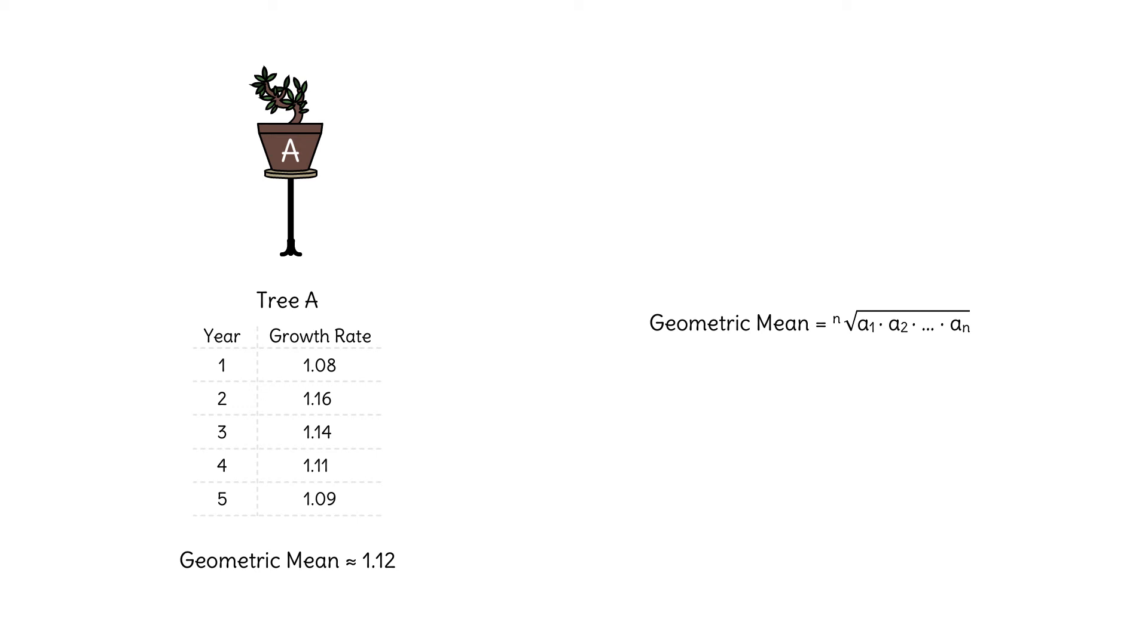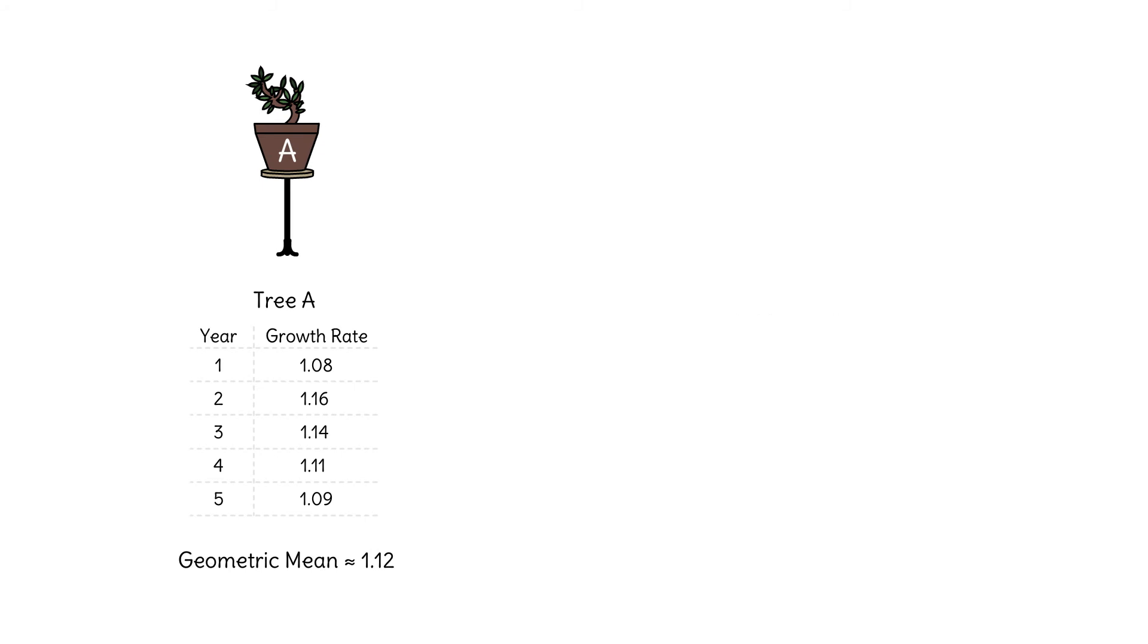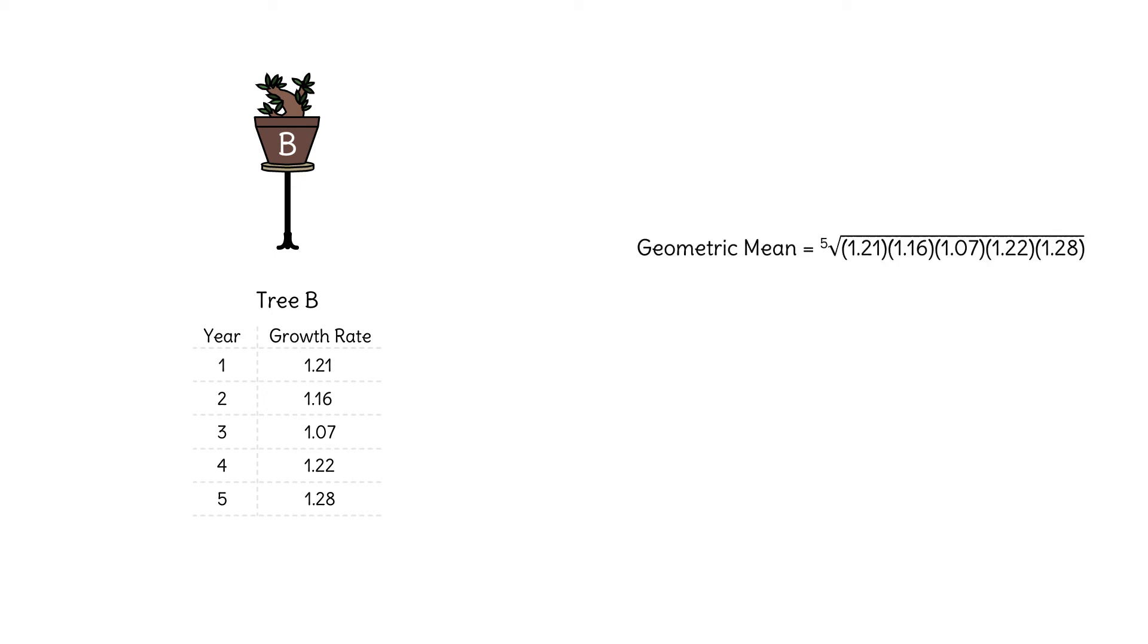Let's find the geometric mean of the growth rates for the second tree. Remember, the initial height of the tree isn't relevant. To calculate the geometric mean, we take the fifth root of the product.